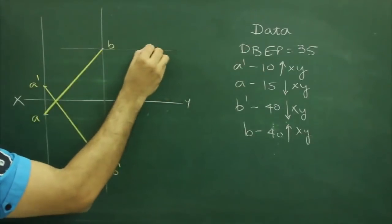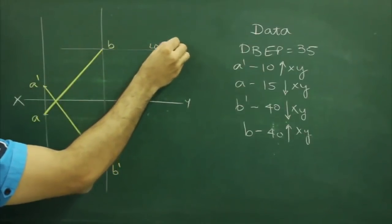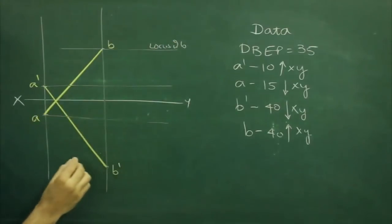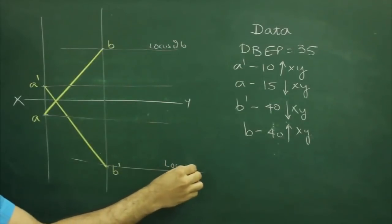What we need to do first, first we will draw locus. Locus of B' as a horizontal line from A' and A, as well as locus of B.